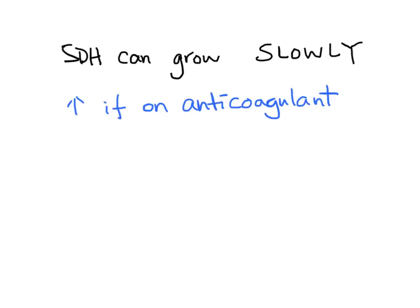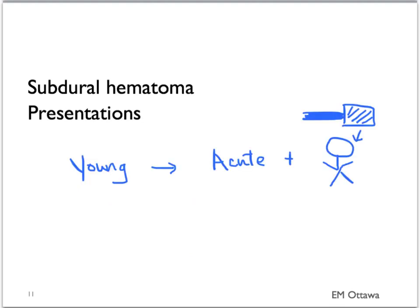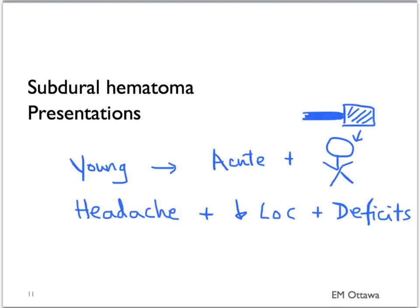There are various presentations of subdural hematomas. In younger patients, since they do not have a lot of brain atrophy, their presentation is usually acute after trauma. Their presentations will include headache, decreased level of consciousness, and neurological deficits.